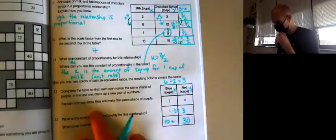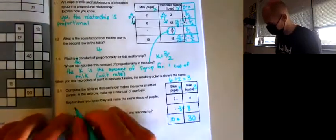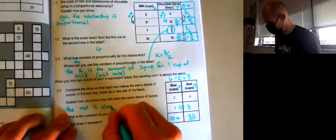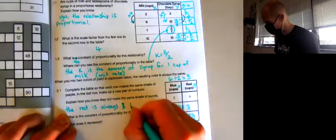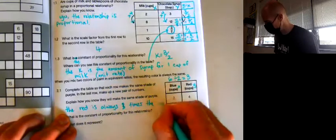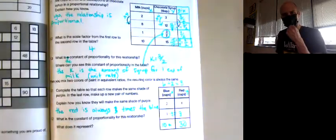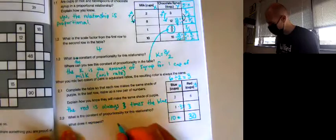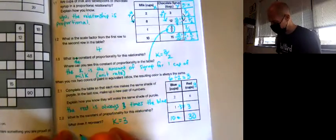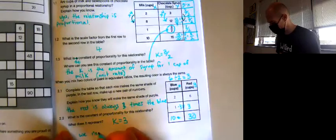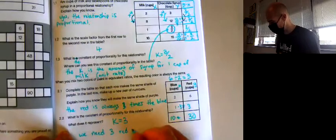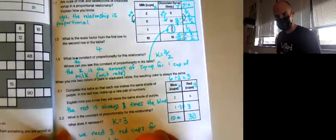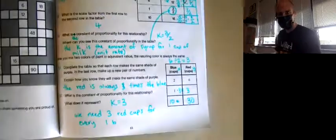Explain how you know they will make the same purple. The red is always three times the blue. So that relationship is staying constant, so it should always make the same color. What is the constant of proportionality for this relationship? K is going to equal three. And it tells us we need three cups of red for every one blue. All right, let's do the explorer section on the back. Luckily this explorer section isn't as challenging as some of the other ones are sometimes.